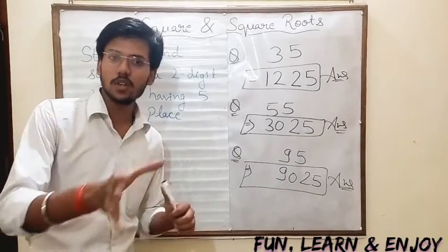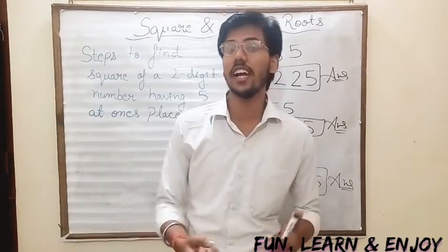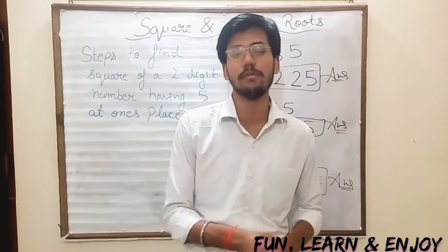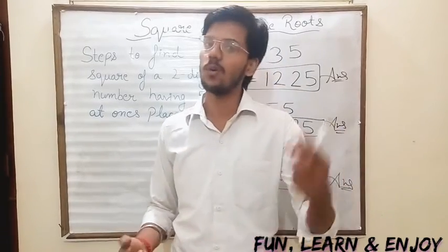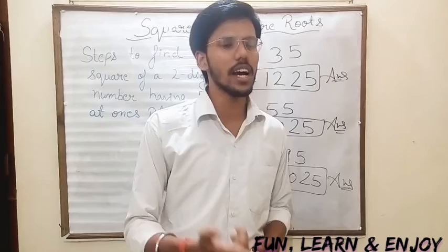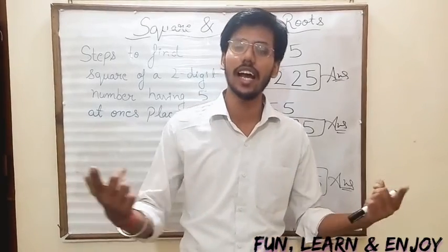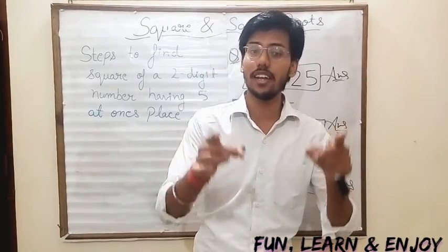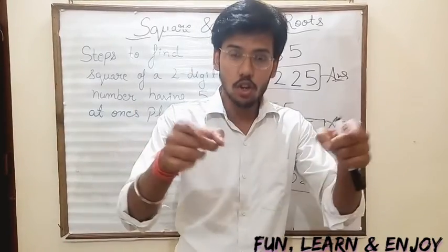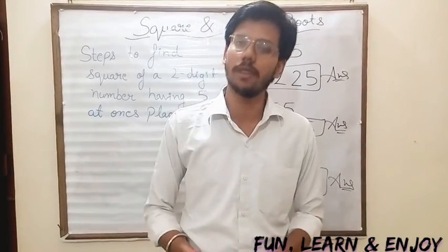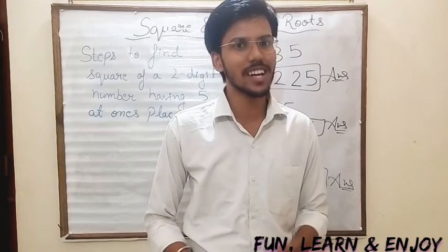So that was an easy trick. With this trick you can find the square of any two-digit number having 5 at the ones place. Best of luck, keep practicing, keep learning. If you have any queries, doubts, or suggestions, drop them in the comment box and I will get back to you. Good luck!